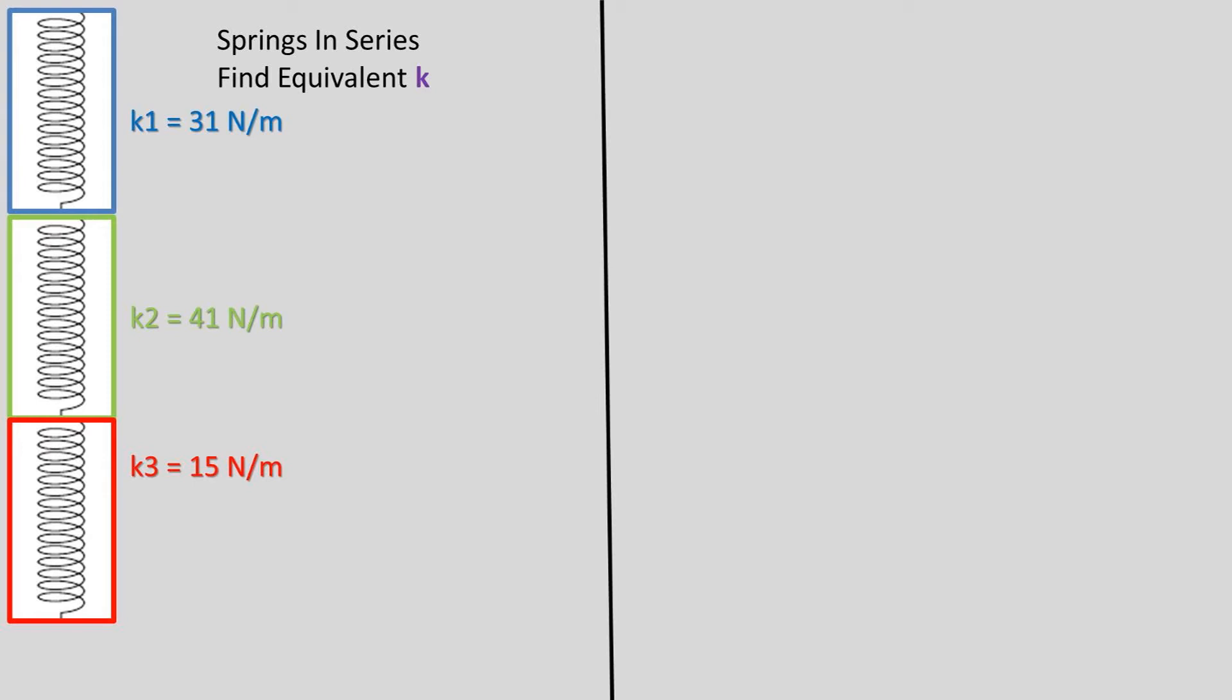Now let's find the equivalent spring constant for these springs in series. I have placed the spring constant in units of newtons per meter. This means that per meter of elongation or contraction from nominal, the spring will apply a resisting force in newtons.